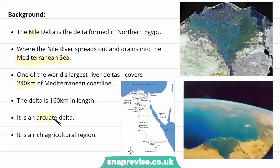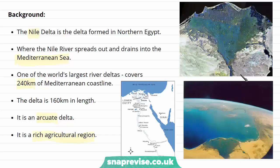It's also a form of an arcuate delta, which is the specific shape of the delta that's formed. And it's also a very rich agricultural region, which is going to play significant importance in the rest of the video to do with the challenges and opportunities in the region. As you can see from this image, compared to the surrounding landscape, it's extremely fertile, as we can see from the green and blue colours compared to the deserts around the edges. Most people in Egypt live along the River Nile, and a lot of people — including most of the Egyptian population — live in the area of the Nile Delta.